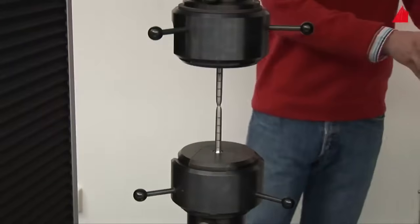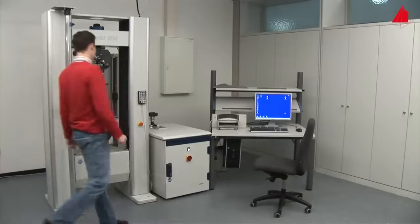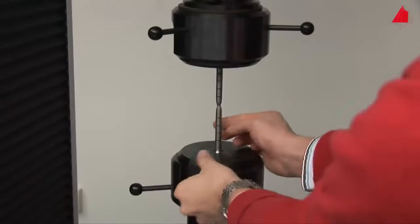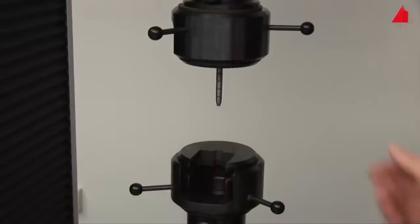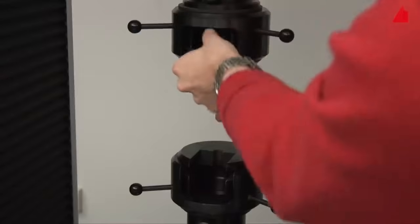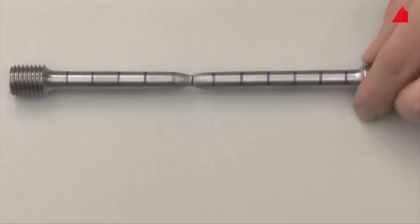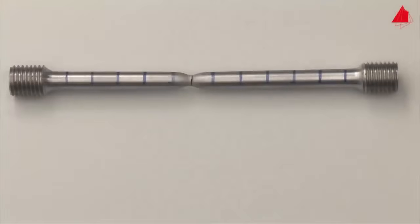In the last step, the tester swings the extensometer back into its resting position and removes the broken test piece. On the work table, he puts the fragments back together again.